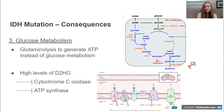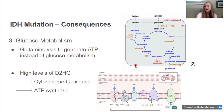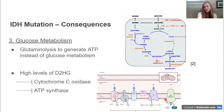A third area impacted by this mutation is glucose metabolism. Because the enzyme can no longer produce alpha-ketoglutarate, the cell now relies on glutamine instead, choosing the glutaminolysis pathway to generate ATP rather than the regular Krebs cycle. High levels of D2-hydroxyglutarate have also been linked to inhibition of cytochrome C oxidase — complex four of the electron transport chain — and inhibition of ATP synthase.